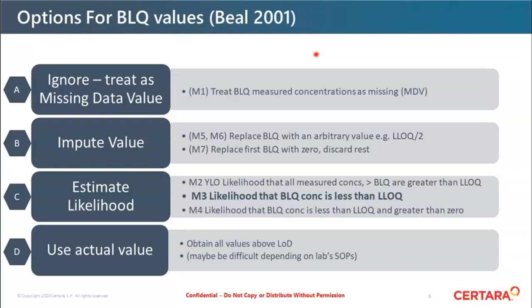Another alternative is to impute a value. And he describes three methods, M5 and M6, which involved replacing BLQ with an arbitrary value, typically half the level of quantification. Whether you replace just the first value or all of the values after t last, was the difference between M5 and M6. And M7 was to replace the first BLQ value with zero and then discard the rest. Now generally those methods aren't recommended. And since we've got software that we can handle the estimation of likelihood of this, we will look at those preferred methods, M2, M3 and M4 for the rest of the presentation.